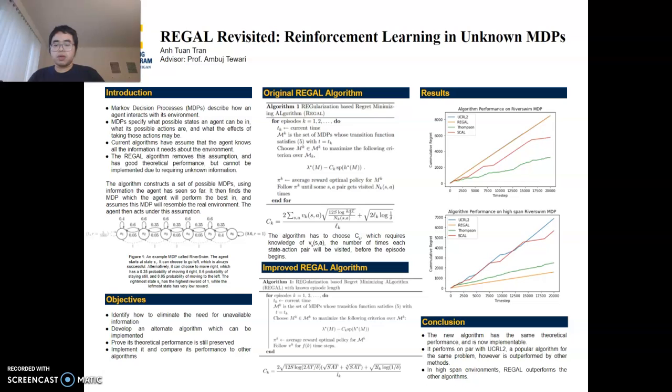So for this project, my objective is to identify how to remove this restriction and remove the need for unavailable information. To develop a new algorithm which can be implemented, prove that the new algorithm has the same theoretical performance as the old REGAL algorithm, and implement it and compare its performance with other similar algorithms which solve the same problem.